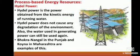Now, Process Based Energy Resources. Hydro power: Hydro power is the power obtained from the kinetic energy of running water. Hydro power does not cause any degradation of the environment, and the water used in generating power can still be used again. Bhakra Nangal in Punjab and Koyna in Maharashtra are examples of this.